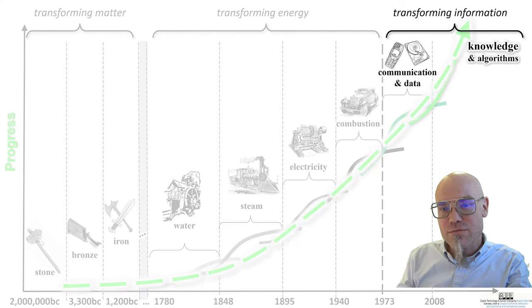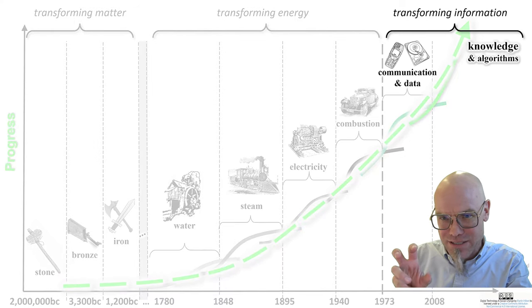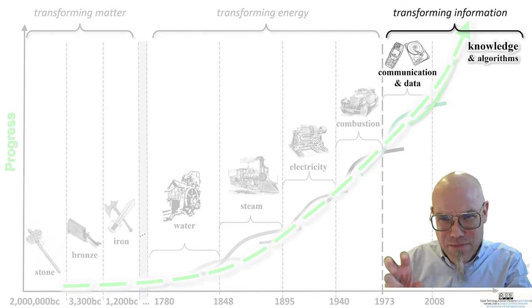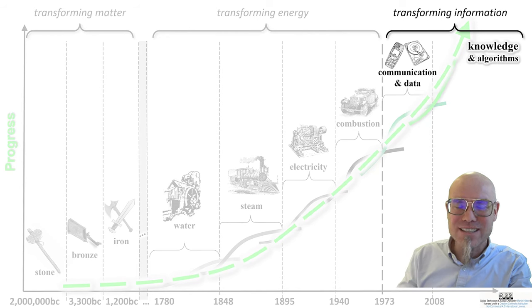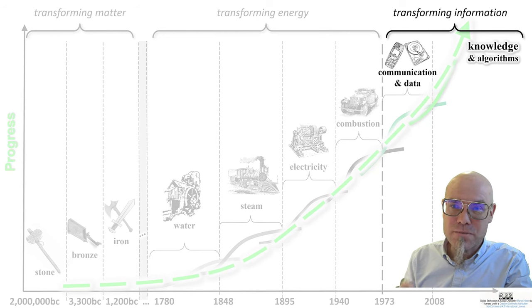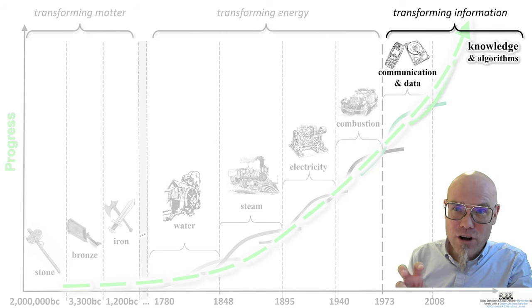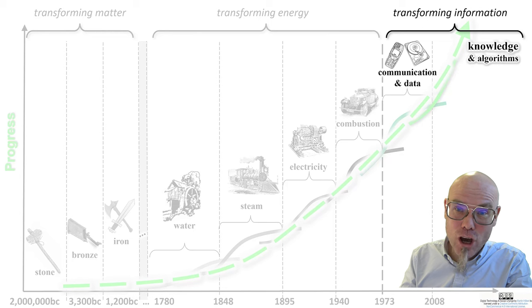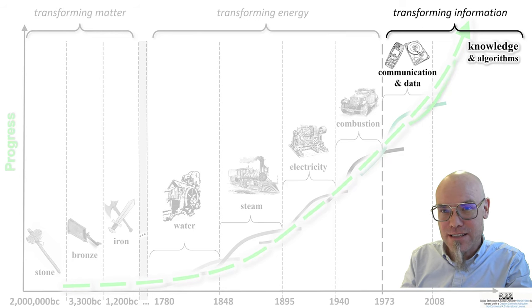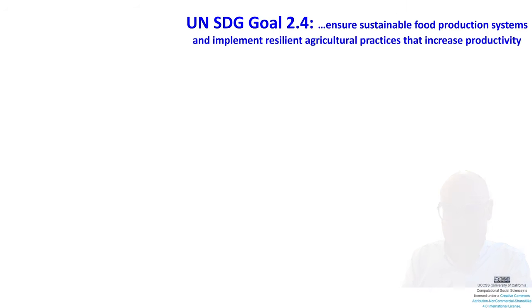Let's focus more on these two steps that we are in the midst of in this digital revolution: data and communication, and knowledge and algorithms — which has to do with artificial intelligence.